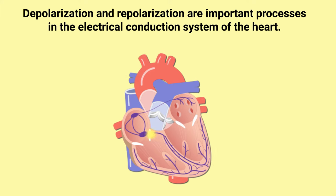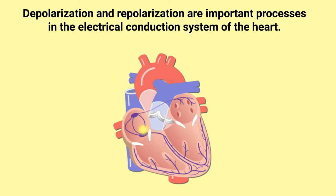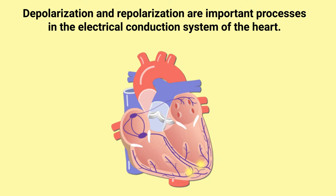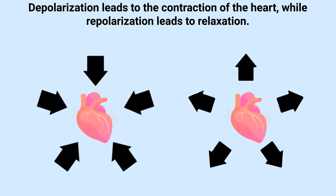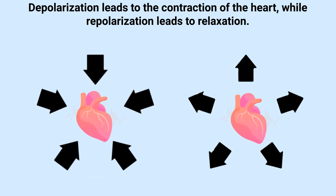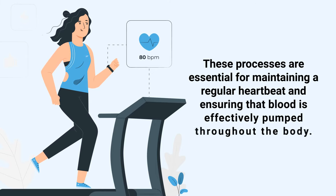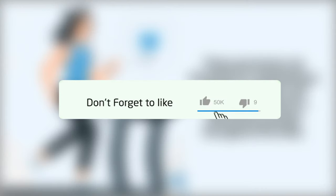Depolarization and repolarization are important processes in the electrical conduction system of the heart. Depolarization leads to contraction while repolarization leads to relaxation. These processes are essential for maintaining a regular heartbeat and ensuring that blood is effectively pumped throughout the body.